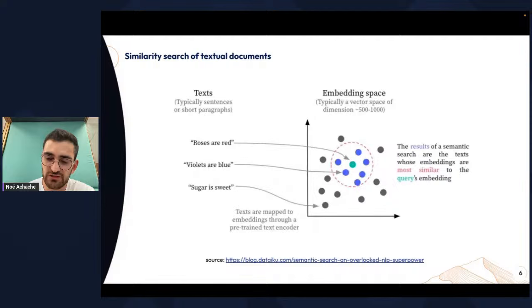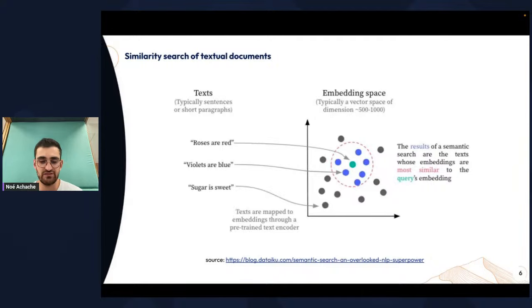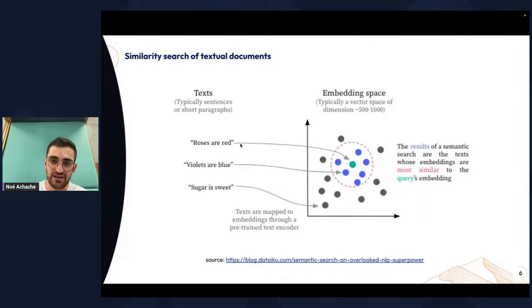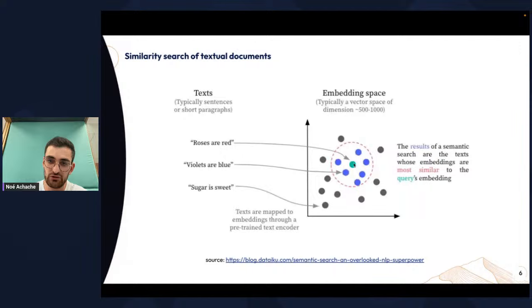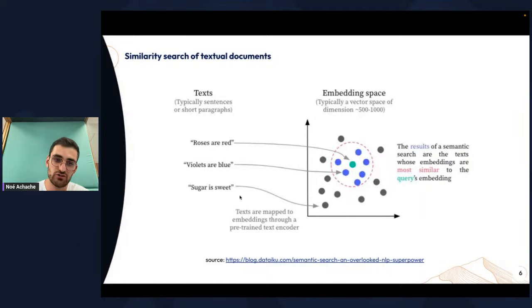How it works: imagine your vectors are not 800 or 1000 dimensions, but only two dimensions — you could plot them in this space. Let's say you try to input 'roses are red' and get the most similar text from the database. The point you draw will be very close to points which are semantically similar, like 'violets are blue', but very far from points which are not semantically similar, like 'sugar and sweets'.